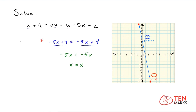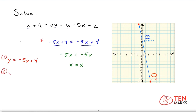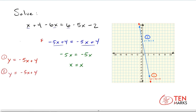Look at this step right here. You can rewrite both sides of this equation as two separate equations. So you can rewrite it as y equals negative 5x plus 4 — that's one equation. And the second equation would be y equals negative 5x plus 4. And then when you go to graph that, you get the same line.